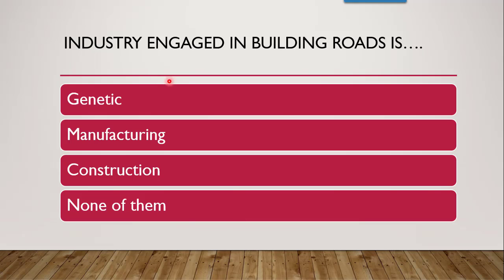The next question is: the industry engaged in building roads is — whether it is a genetic industry, manufacturing industry, construction industry, or none of them. The correct answer is construction industry. As we discussed, construction industry includes construction of various roads, dams, buildings, etc. So construction industry is the correct answer.